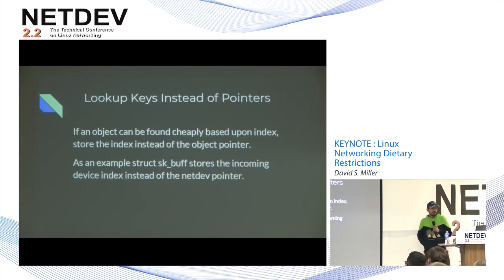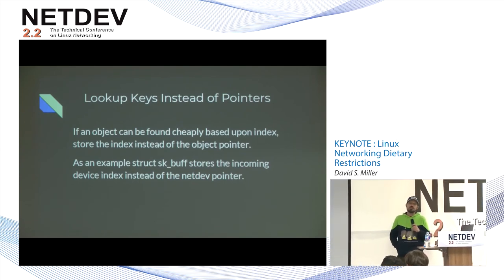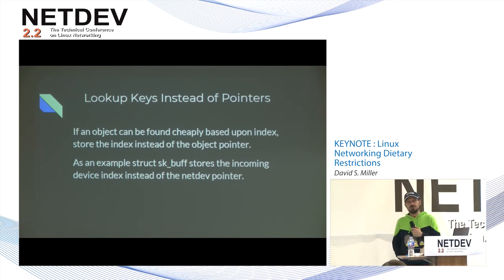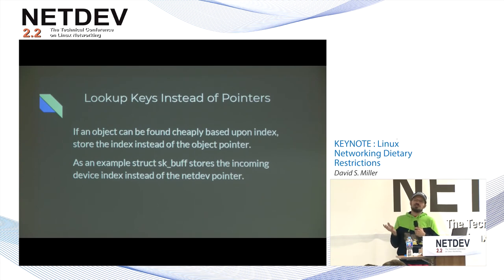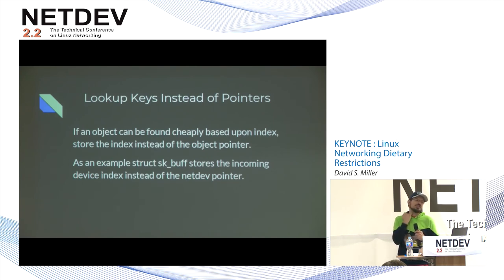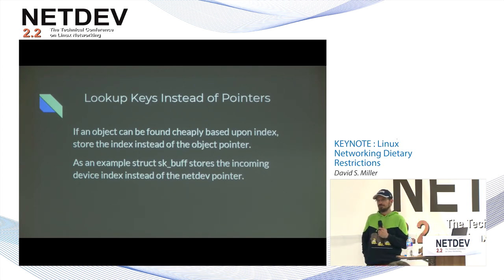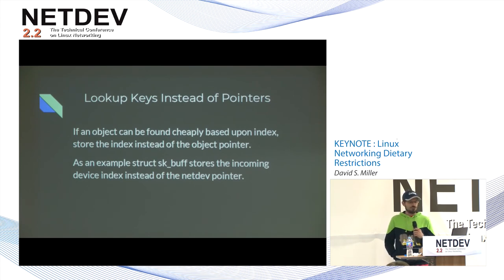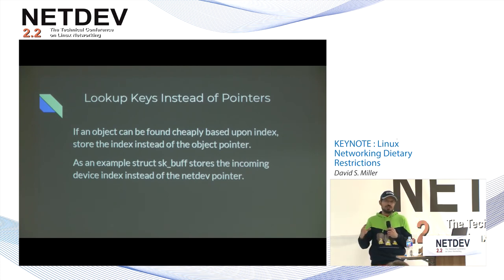Lookup keys instead of pointers: store the index to some kernel object looked up in a hash table or other data structure, rather than the pointer to the object itself. One major consideration is how inexpensive it is to do the lookup — if it's an RCU lookup into a hash table, you can probably do this. One example: the packet metadata structure stores the incoming device the packet arrived on in skb->iif. We used to store the actual pointer to the net device there, but instead we just store the ifindex and look it up as needed. This technique also applies when the lookup is done very infrequently — even if slightly expensive, infrequent use makes it reasonable.